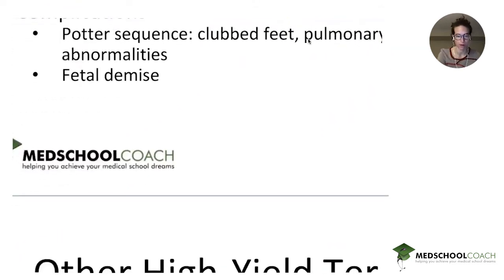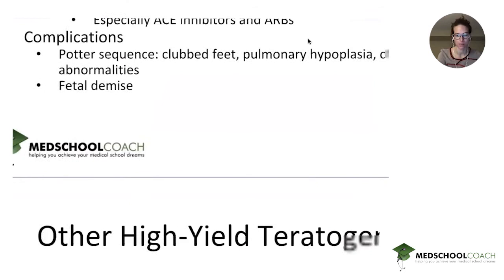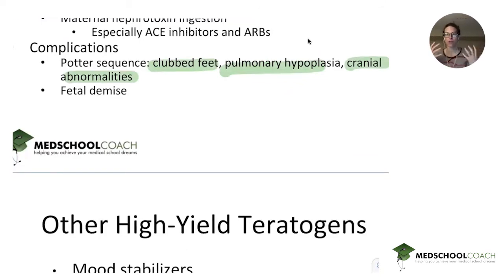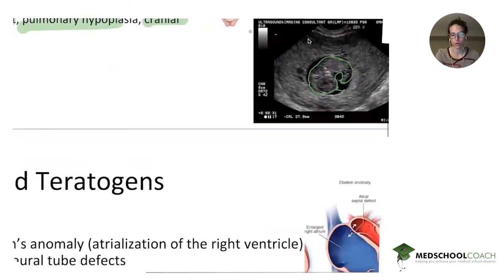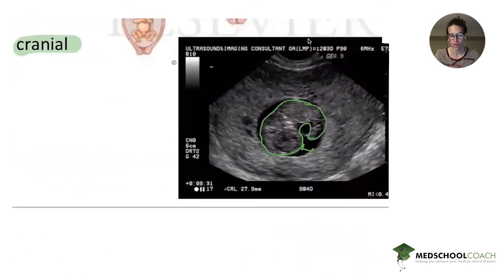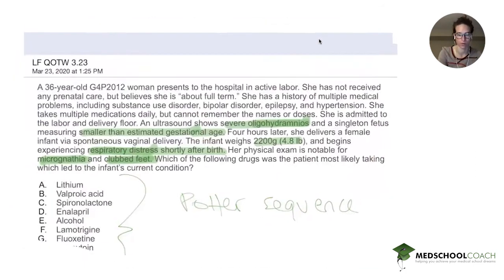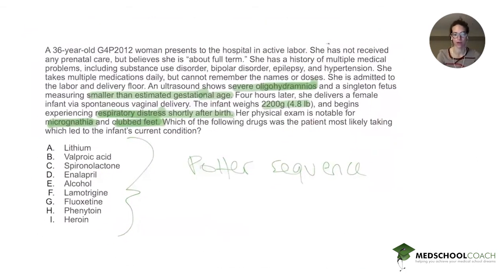The Potter sequence includes clubbed feet, pulmonary hypoplasia, and cranial abnormalities — in this case, micrognathia. It can cause other things as well, because if you imagine the fetus in there, it's so squished that it has a hard time developing those structures. So going back to our question, our baby has oligohydramnios leading to the Potter sequence, and now we have to figure out which of these drugs could have caused the oligohydramnios.